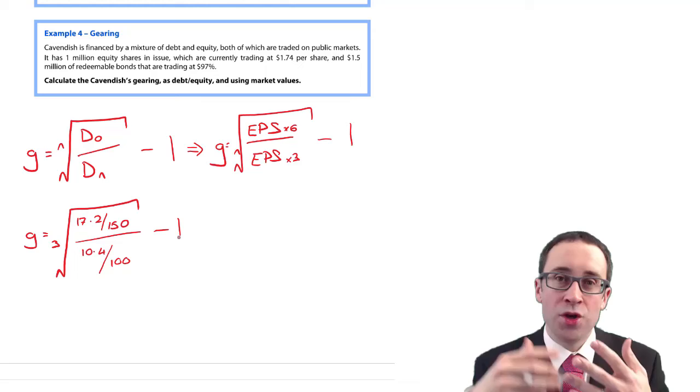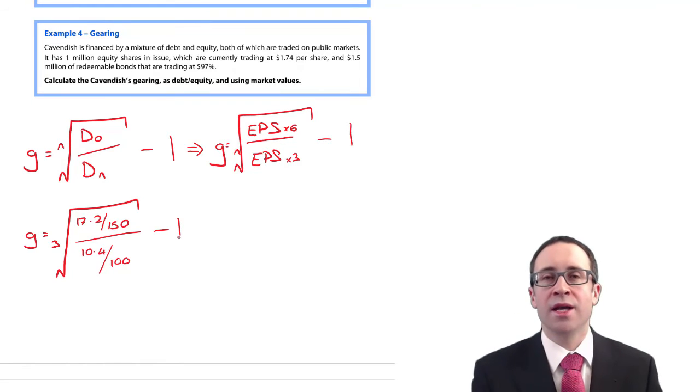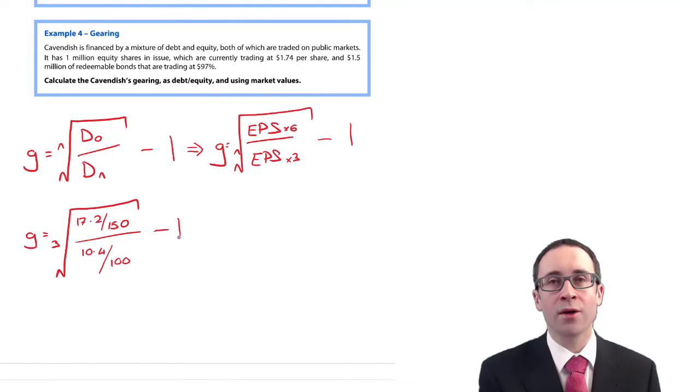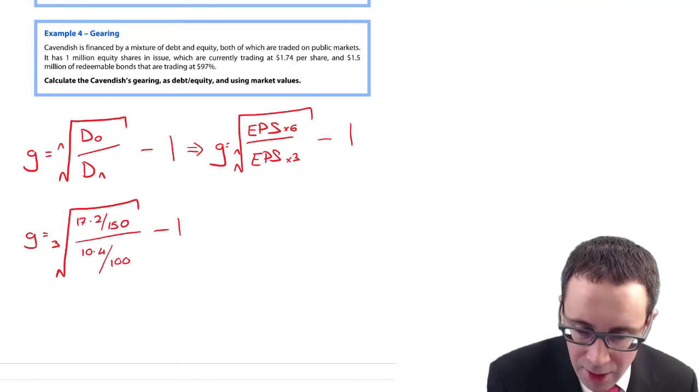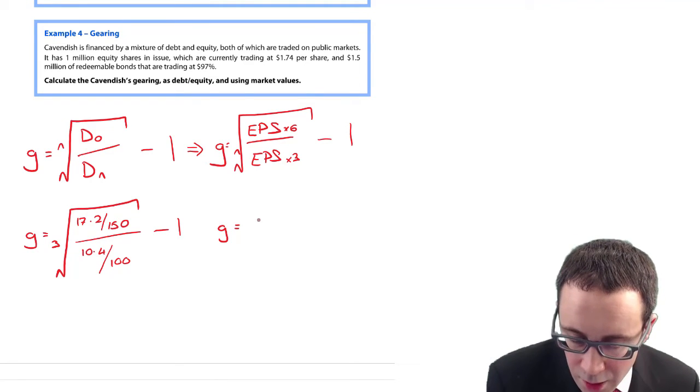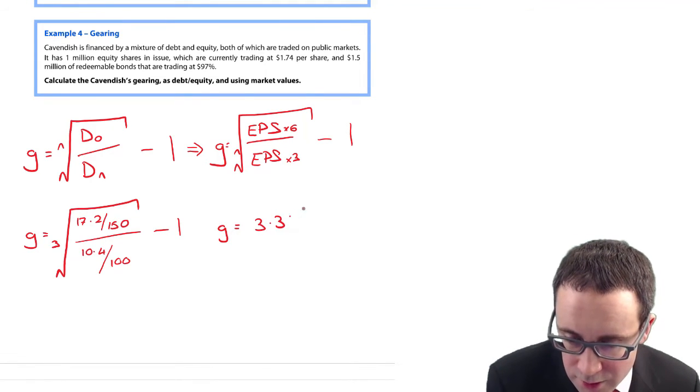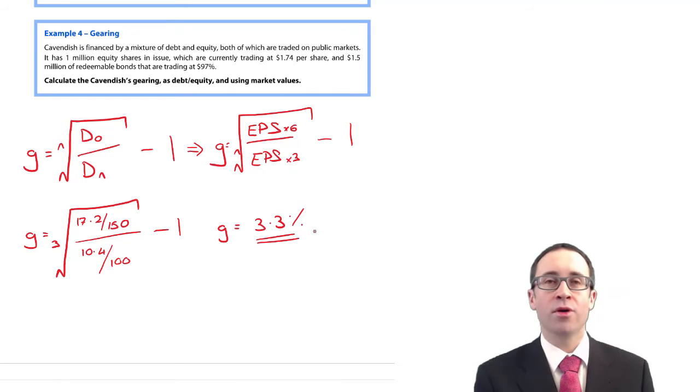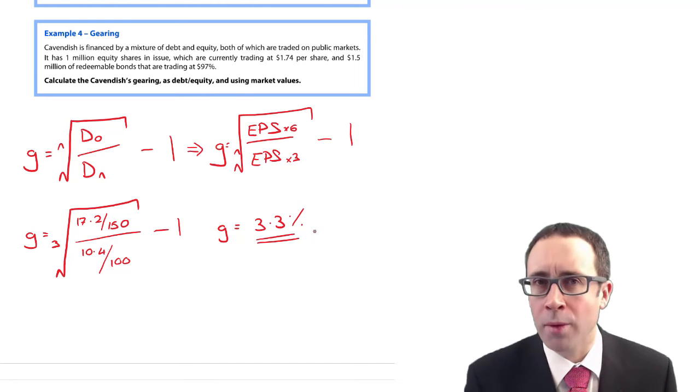Then I would do three, second function - it's normally a second function when doing the Nth root of something - Nth root of your answer. You can use your previous answer, press equals, and then subtract one. Your compound average growth rate should be 3.3%.